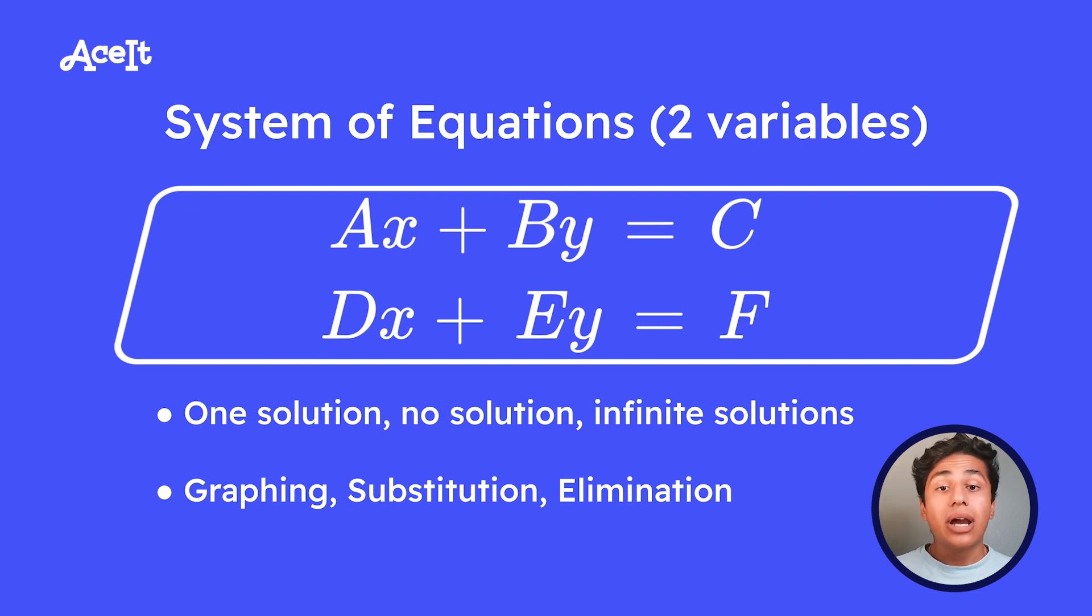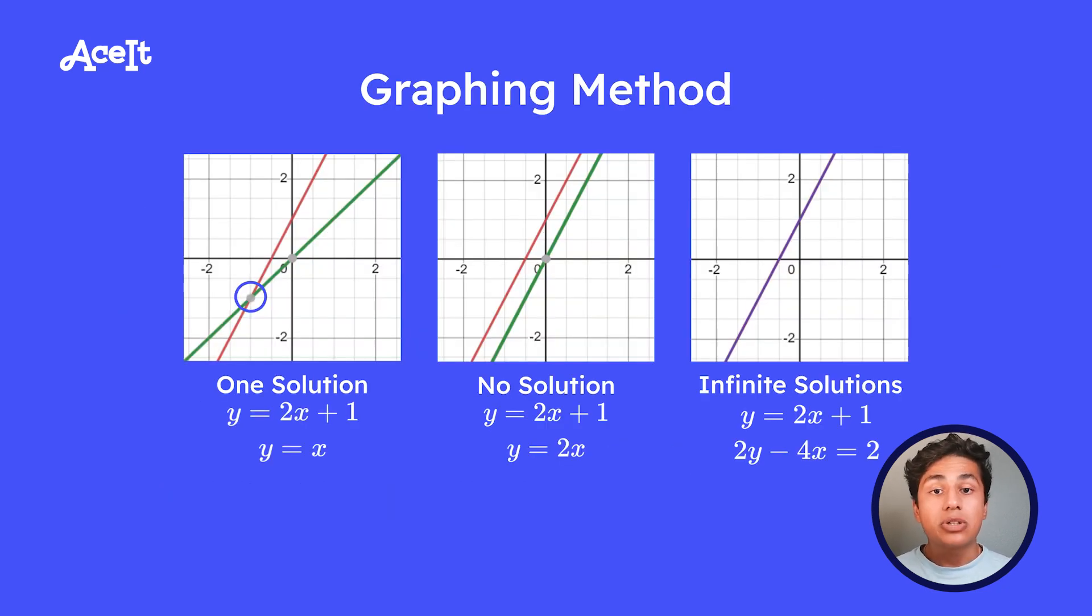All right, so let's start out with the graphing method. This method is probably the most straightforward one, and it's where you're given the equations and either by hand or with your graphing calculator, you graph the given system. The solution to the system is the point at which the lines intersect.